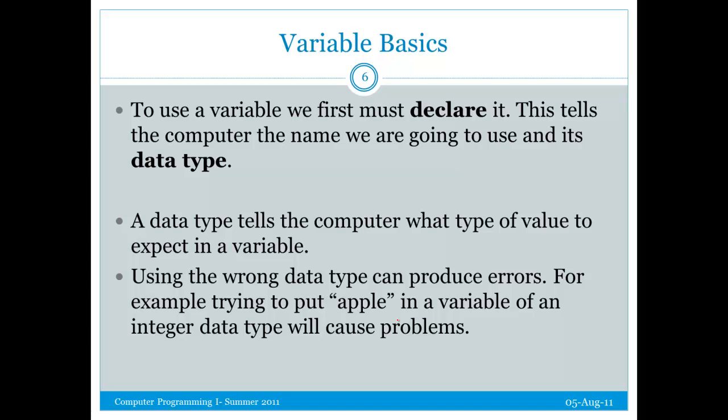Alright, so to use a variable, we have to declare it. We can't just use it in the code without declaring it. This tells the computer the name we're going to use, so we can refer to it by name later, and it also gives it a data type. A data type tells the computer what type of value to expect. Using the wrong data type causes errors, so declaring the right data type is important.